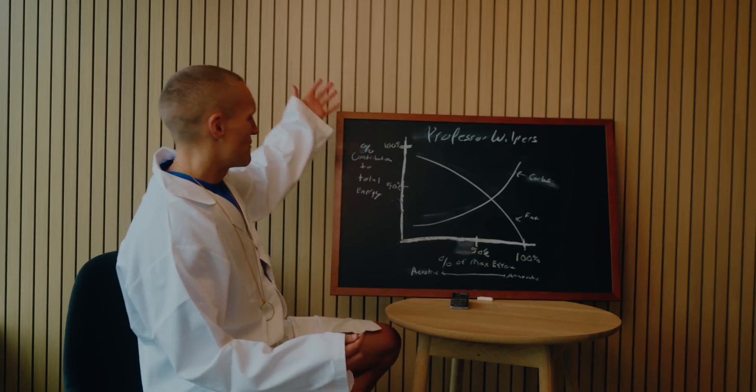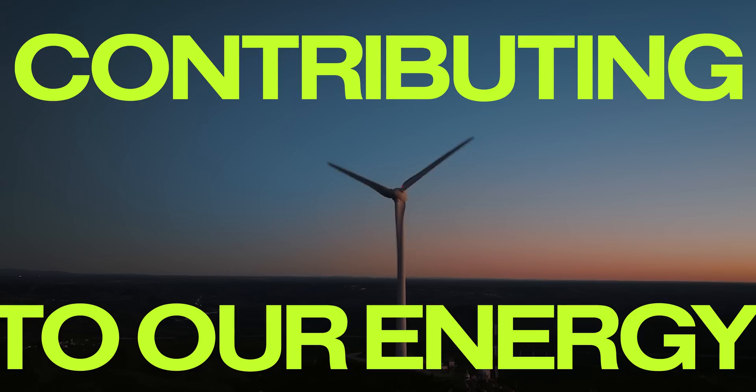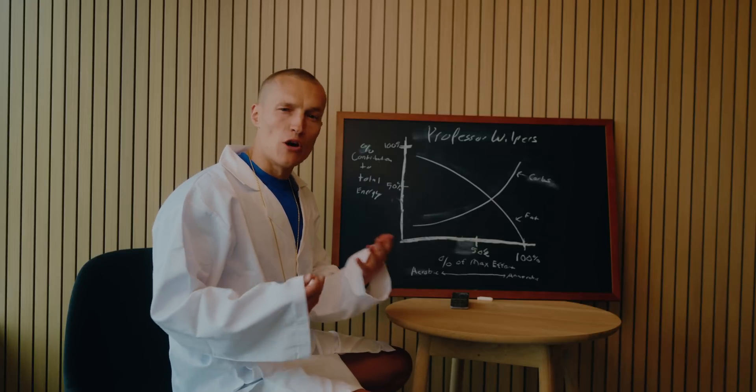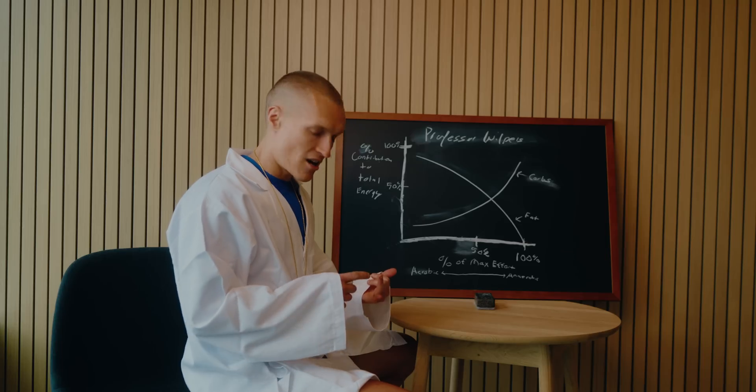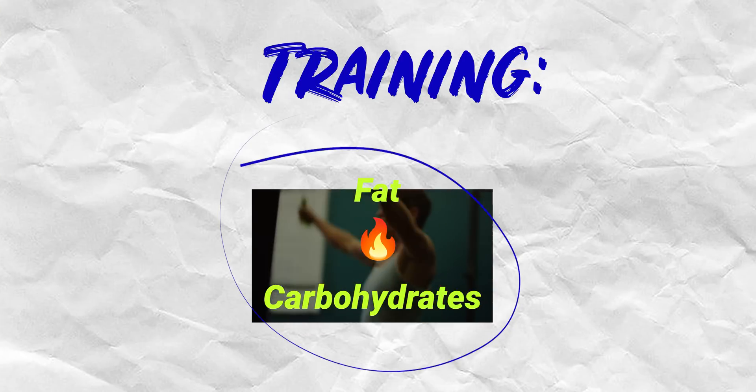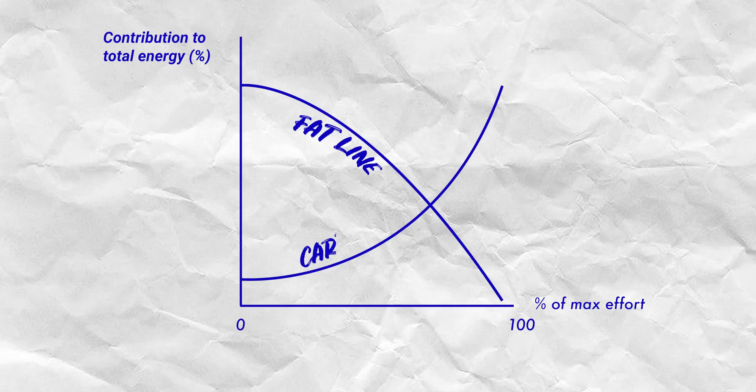So first off, I have a graph here, and this helps us explain what is contributing to our energy. Where is our energy coming from when we work out? And why do we think low intensity is where all the fat burning is happening? Typically when we're training, we're burning a combination of fat and carbohydrates. Now here's an important graph. On the left, on the y-axis, you have contribution to total energy. On the x-axis, you have percent of max effort. Now our lines, we have the fat line and we have the carb line, because carbs and fat contribute most of our energy when we're training.